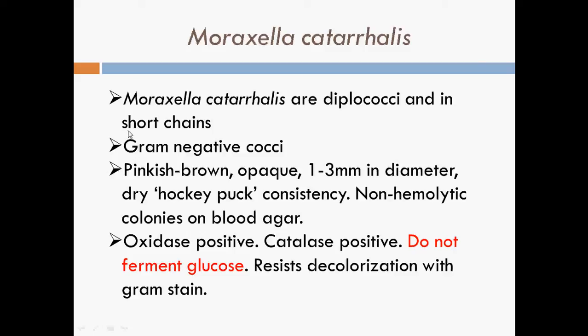Moraxella catarrhalis are diplococci occurring in short chains. They are gram-negative cocci. They form pinkish-brown opaque colonies 1 to 3 millimeters in diameter with a dry hockey puck consistency. They produce non-hemolytic colonies on blood agar, showing gamma hemolysis. They are oxidase positive, catalase positive, do not ferment glucose, and also resist decolorization with gram stain.